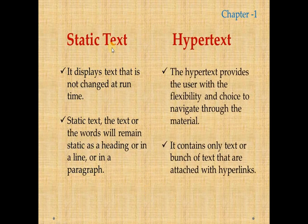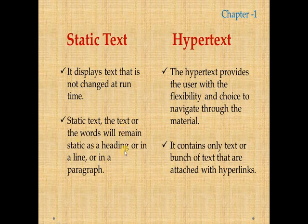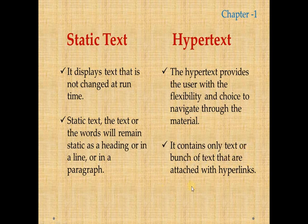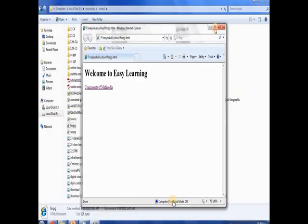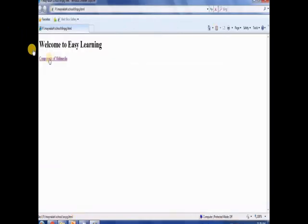Static text displays text that is not changed at runtime. Hypertext provides the user with flexibility and choice to navigate through the material, so the text remains as a heading or a line in a paragraph. With hypertext, it's a bunch of text attached with hyperlinks. Static remains static — as per the name, hypertext is going to have a hyperlink. Hypertext means text or a bunch of text attached with hyperlinks.